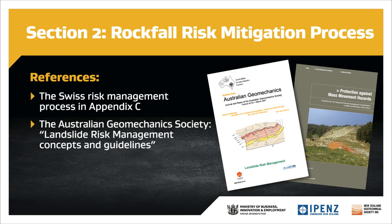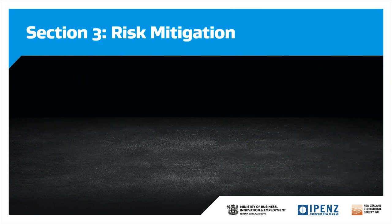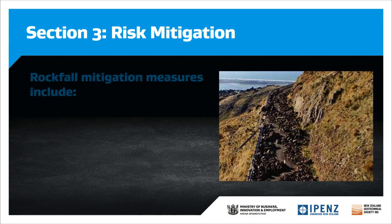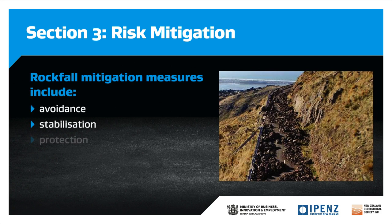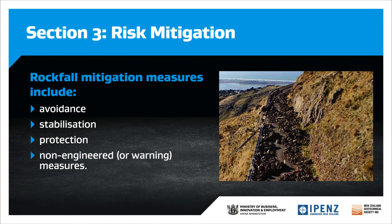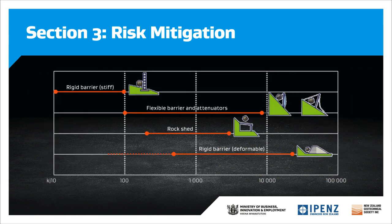The Australian Geomechanics Society publication, Landslide Risk Management Concepts and Guidelines, is another useful reference that can be found online. Section 3 provides an overview of a range of possible rockfall mitigation measures. These include avoidance, stabilization, protection, and non-engineered or warning measures. Our guidance focuses on passive protection measures, but of course some sites may call for multiple measures to be deployed. The approximate energy capacity levels in kilojoules for each type of protection structure covered in the guidance are shown here. The decision relating to both type and location of barrier will be informed by the nature of the site.